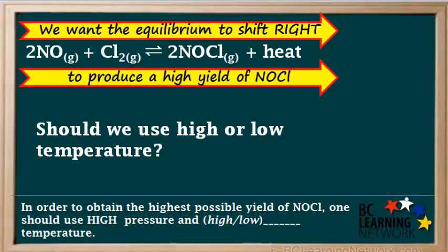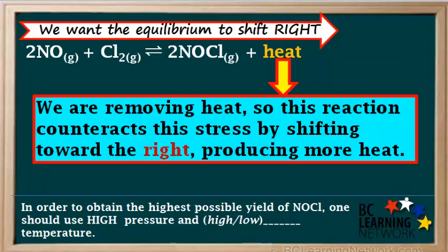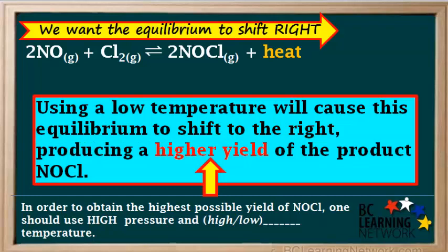The next question we need to answer is whether we should use high or low temperature. Remember, in order to obtain a high yield of product NOCl, we want the equilibrium to shift to the right. According to Le Chatelier's principle, a decrease in temperature will cause an equilibrium to shift toward the side with the heat term. In other words, we are removing heat, so this particular reaction counteracts this stress by shifting toward the right, producing more heat. So, using a low temperature will cause this equilibrium to shift to the right, producing a higher yield of the product NOCl.